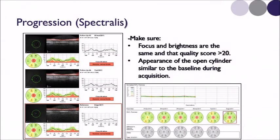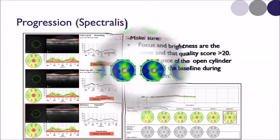This is what the serial analysis looks like on the Spectralis OCT from Heidelberg. They're very good data, but they don't give you stats, so you just have to do the comparison in your head.